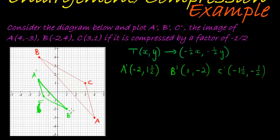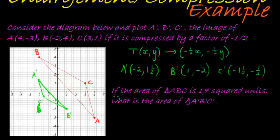Now, the second part of this question, they tell us that the area of triangle ABC, in other words, the original area, is 17 squared units. Okay, whatever units we're working with. What is the area of triangle A accent, B accent, and C accent? What is this one's area?